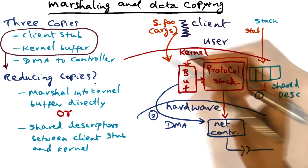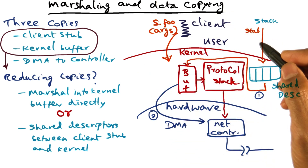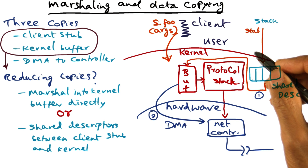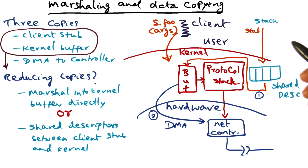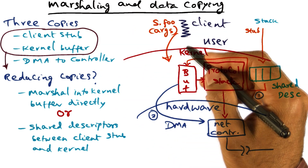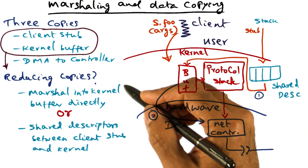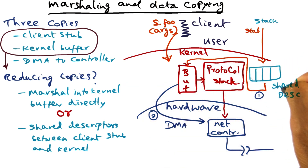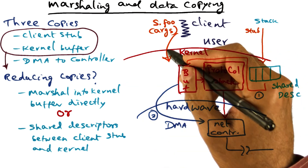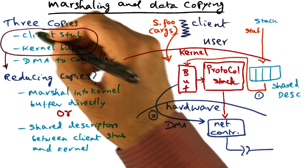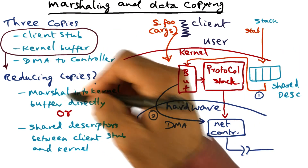And this happens on both sides. It happens when the client has to push the arguments to the server side, and it happens again on the server side when the server has to push the results back to the client. So the marshalling is happening on both ends, and for both ends we can use the technique of a shared descriptor or pushing the client stub or service stub into the kernel in order to reduce the number of copies from two down to one.